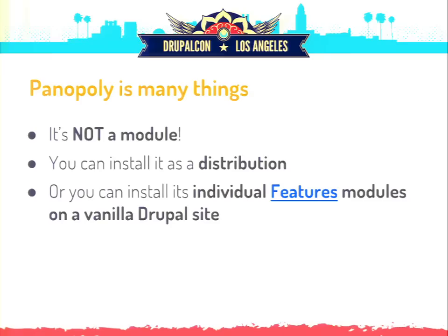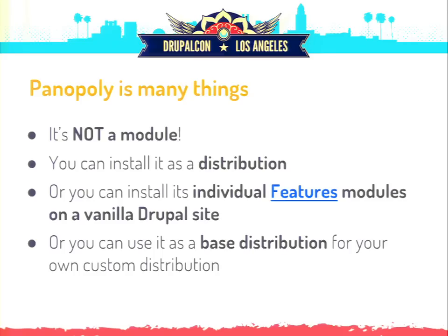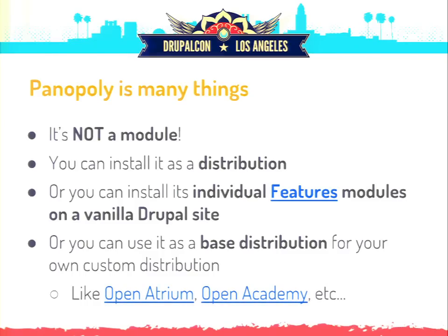Or you can install Panoply's individual feature modules on a vanilla Drupal site. Panoply is made up of a dozen or so feature modules for each of the components. We have a Panoply admin module, a Panoply WYSIWYG module with WYSIWYG configuration. You can take just Panoply WYSIWYG and install it on your vanilla Drupal site if you want to use our WYSIWYG configuration. You can also use it as a base distribution, like Open Atrium and Open Academy.